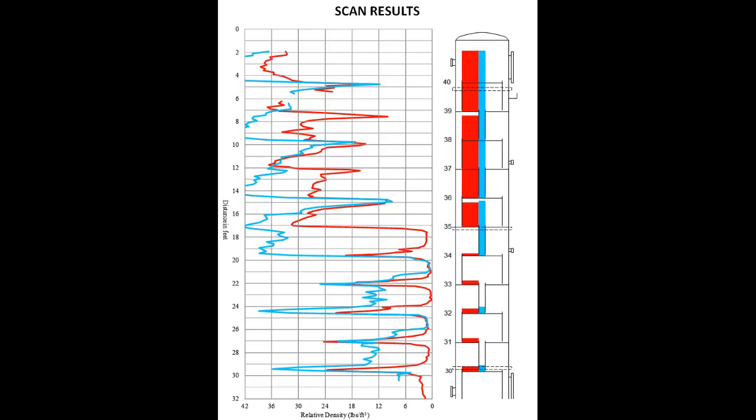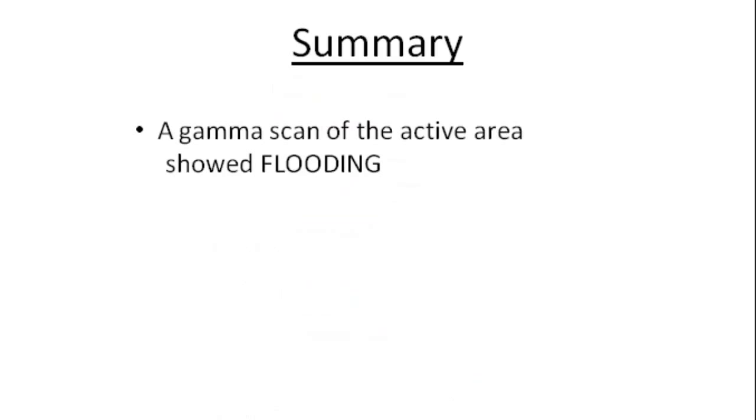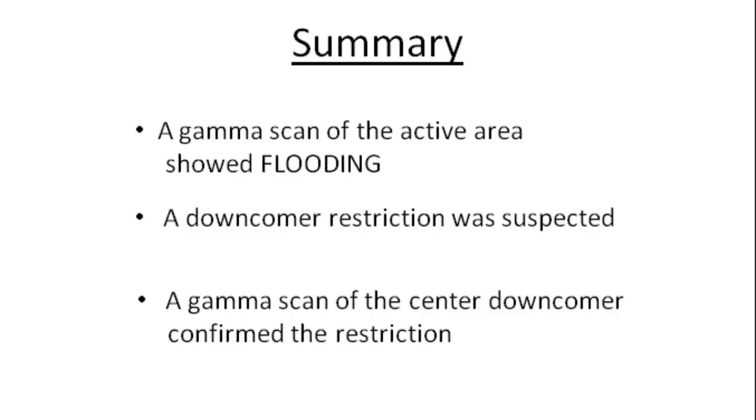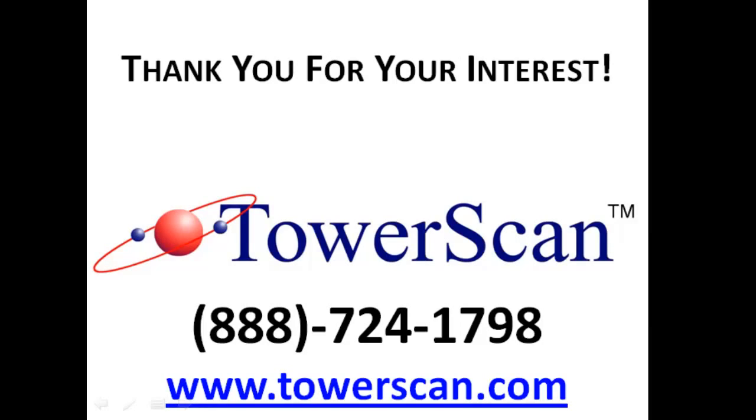With that, plant personnel were armed with the knowledge of the pinpoint location of the flood initiation point. In summary, the first scan of the active area showed that flooding was present. As a result, a downcomer restriction was suspected, and the second scan through the downcomers verified the nature of the flood. Thank you for your interest in tower scanning.